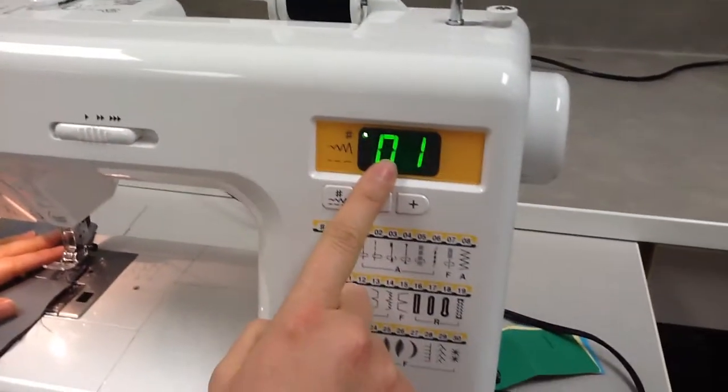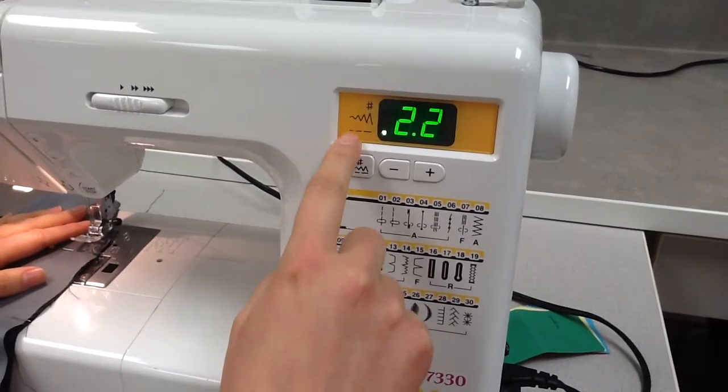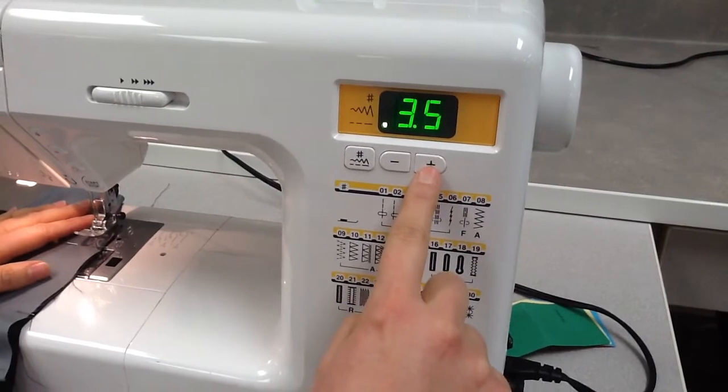So if you turned off your machine in between, make sure that you change this. You're going to hit the button so it goes down to the stitch length at the bottom. You're going to hit the plus as high as it can go which it will stop at 5.